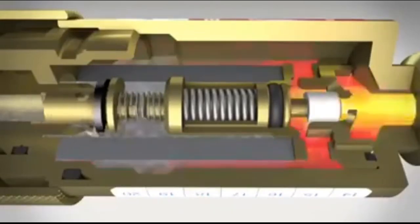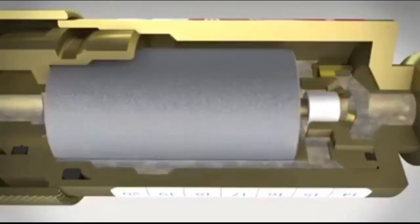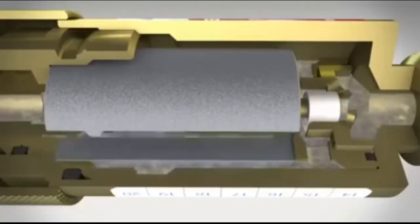If, on the other hand, a flashback occurs, this will be stopped immediately by the key element of the flashback arrestor: the hollow cylinder made from sintered chrome nickel steel. Only with this technology can flames from the flashback be prevented.